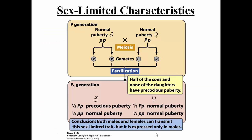Another topic is sex-limited characteristics, where two individuals have the exact same genotype but the phenotype is expressed in only one sex. For example, males and females can both have big P little p or little p little p. Females with either genotype undergo normal puberty, but males with big P little p undergo precocious puberty — early puberty — while little p little p males undergo normal puberty. The same genotype is only expressed phenotypically in males, not females, and this is called sex-limited.